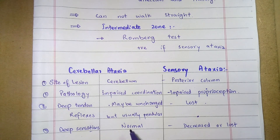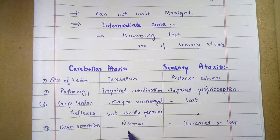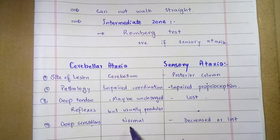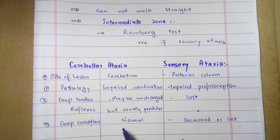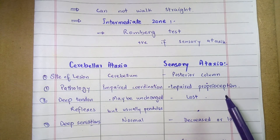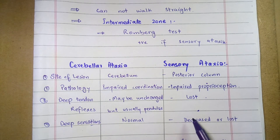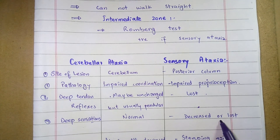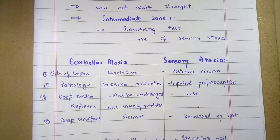Regarding deep sensation: in cerebellar ataxia, deep sensation is normal since the dorsal column pathway is undamaged. In sensory ataxia, deep sensation is decreased or lost — fine touch, fine pressure, and vibration sensation cannot be detected.